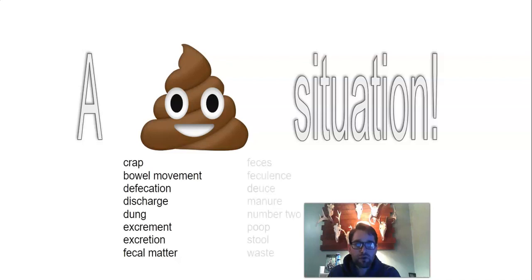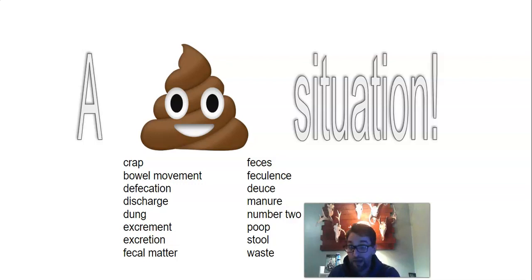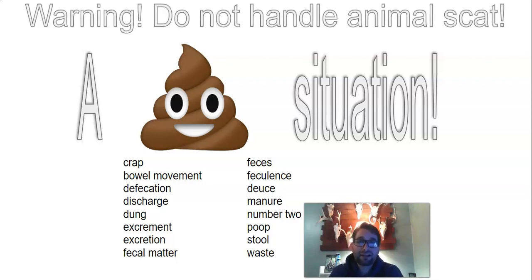We can use animal waste as an indicator of the specific species that live around our neighborhoods. No matter whether you call it crap, feces, defecation, manure, dung, poop, excrement, stool, fecal matter, or waste — it's really important to recognize that you should not ever handle animal scat. And we're going to see in this video why.